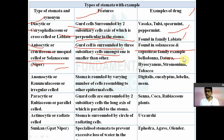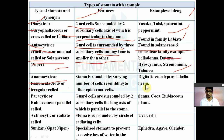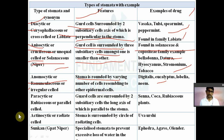The third type is anomocytic stomata, also known as ranunculaceous stomata or irregular-celled stomata. In this type, the stoma is surrounded by a varying number of cells resembling epidermal cells. Examples include digitalis, eucalyptus, and lobelia.